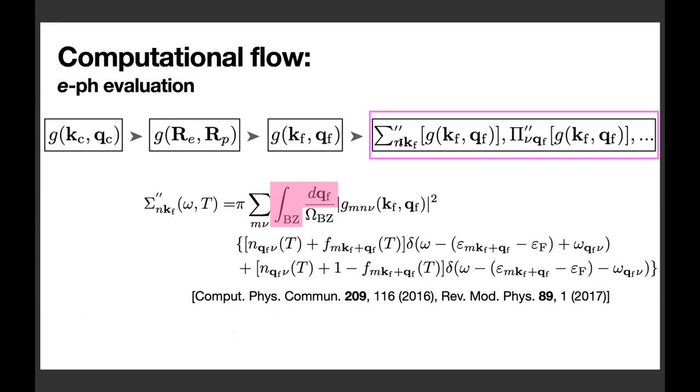For example, the electron self-energy. The expression of its imaginary part is given in this slide. As you can see, usually we need the integration over a dense q grid. And also, we need to evaluate electron self-energy at dense k points.